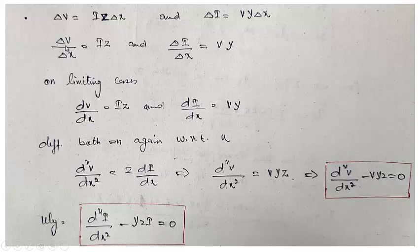In the limiting case as delta X becomes very small, this becomes dV/dx equals I·Z and dI/dx equals V·Y. Differentiating both equations with respect to x, d²V/dx² equals Z times dI/dx. Substituting dI/dx equals V·Y, we get d²V/dx² equals V·Y·Z. This equation is expressed in terms of voltage since we are concerned only with voltage, and Y and Z are constants.